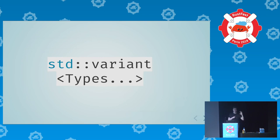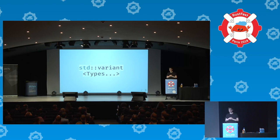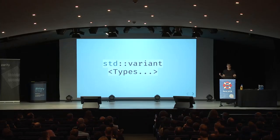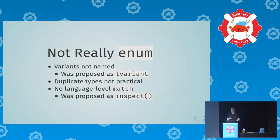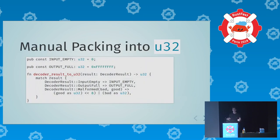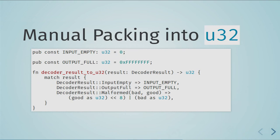In the streaming API we had a non-C-like enum in the Rust API. C++ does have a type-safe discriminated union called std::variant, but unfortunately it's not really like an enum: the variants are not named, it was proposed as 'L variant' but not accepted, and most importantly there's no language-level analog for match — one was proposed as 'inspect' but also not accepted. So I ended up manually packing the bits into a U32 and using that in both the C and C++ APIs, since most applications won't need to inspect the information wrapped in the malformed case.